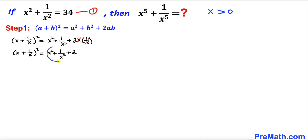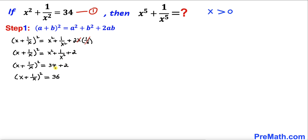We know that x² + 1/x² = 34 from equation one, so we replace it: (x + 1/x)² = 34 + 2 = 36. Now let's take the square root on both sides to undo the square — the square and square root undo each other.